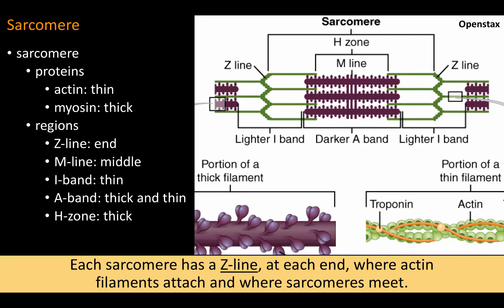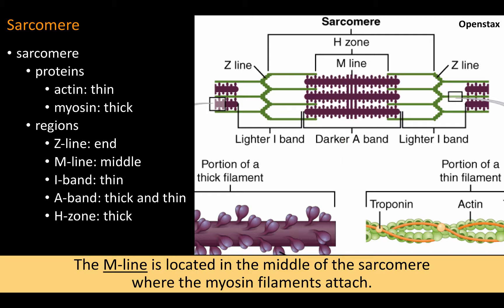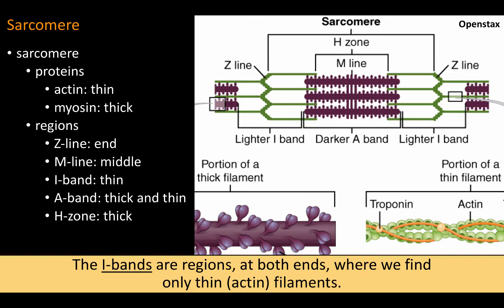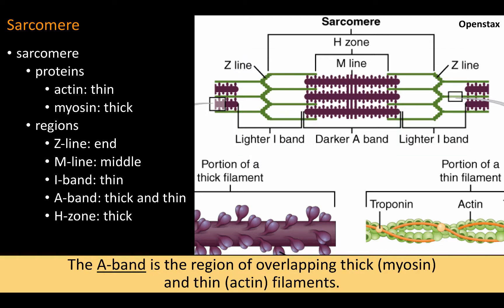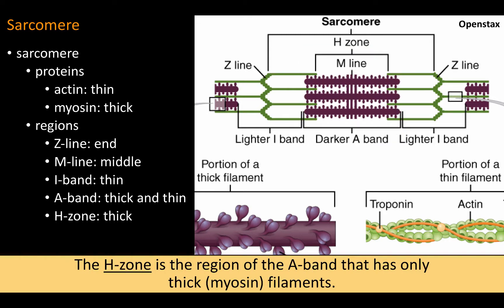Each sarcomere has a Z line at each end, where actin filaments attach and where sarcomeres meet. The M line is located in the middle of the sarcomere, where the myosin filaments attach. The I bands are regions at both ends where we find only thin filaments. The A band is the region of overlapping thick myosin and thin actin filaments. The H zone is the region of the A band that has only thick myosin filaments.